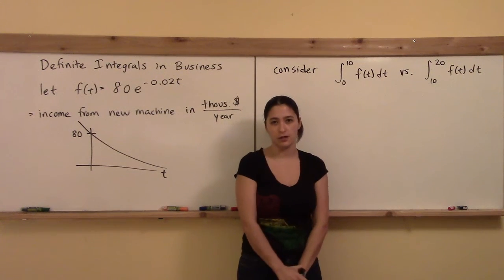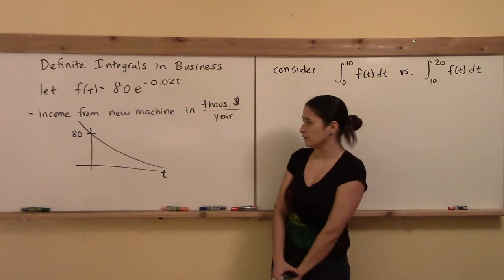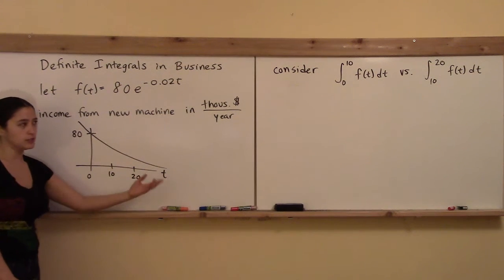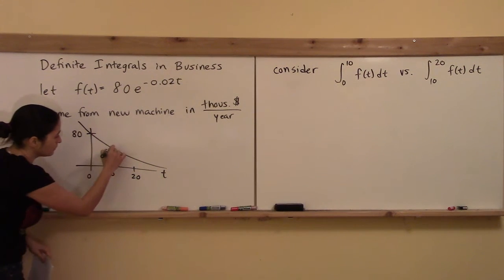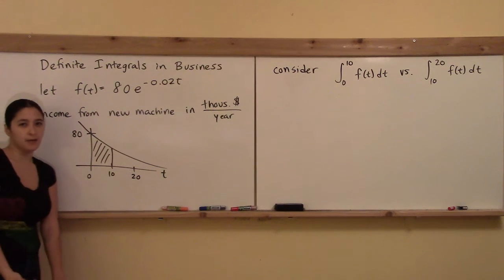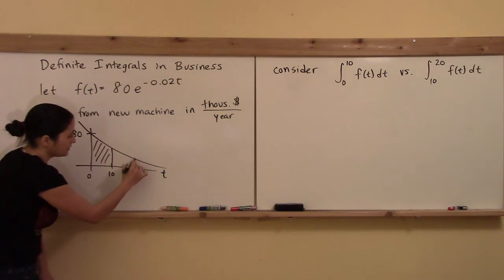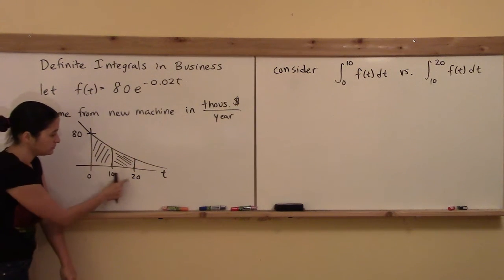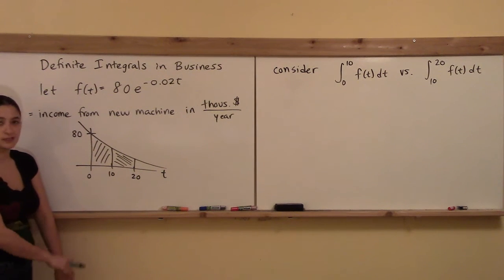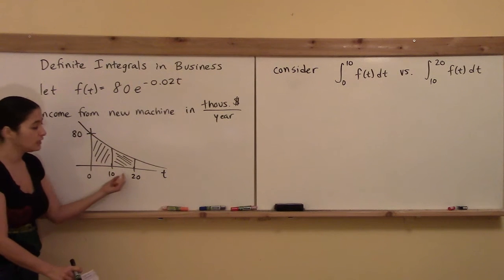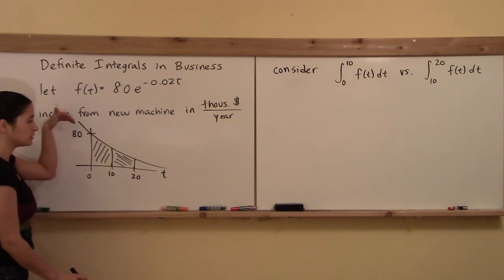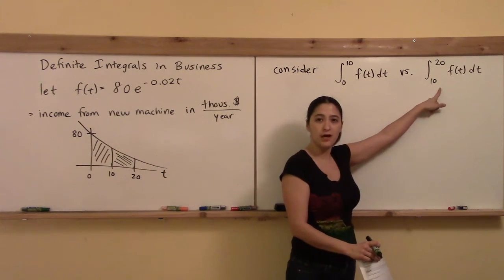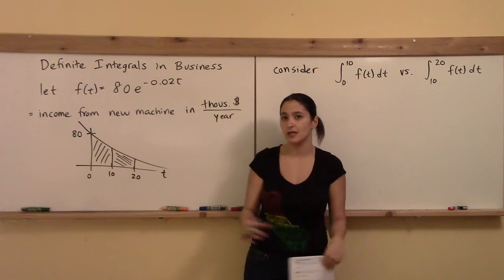Since f(t) is an exponential decay, graphing it shows the curve decreasing from 80. The two intervals from 0 to 10 and from 10 to 20 have the same width, so we compare areas by height. The first interval has more area under the curve because the function is higher there. The continuous income stream decreases due to wear and tear, so the first integral will have a higher value.